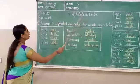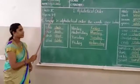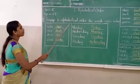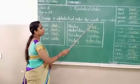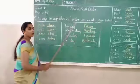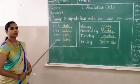Alphabetical order, page number 49. Okay, arrange in alphabetical order the words given below. Okay, first one, first step — box. What is that? Table, chair, desk and stool.